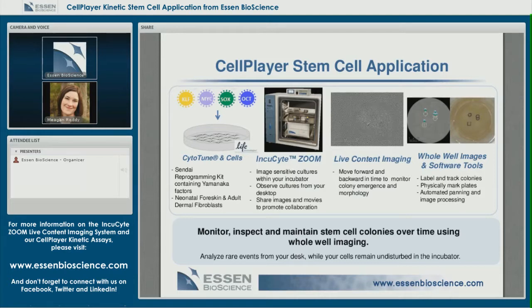Utilizing the software tools, we labeled and tracked emerging colonies. When the time came to positively select clones, we used the marking tool to draw circles or squares around the colonies of interest on the vessel, then removed the plate from Zoom, moved right into the stereoscope, and quickly micro-dissected and transferred clones into fresh cast plates. In this way, we utilized whole well imaging to monitor, inspect, and maintain stem cell colonies from the comfort of the desk while cells remained happy inside the cell culture incubator — as opposed to spending that time in the biosafety cabinet on a stereoscope.